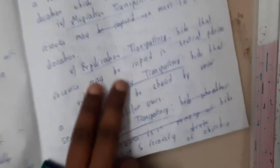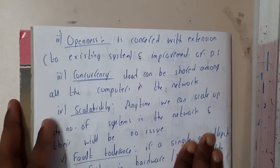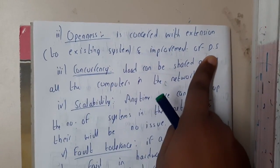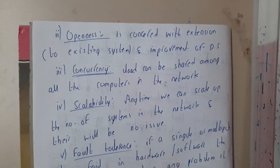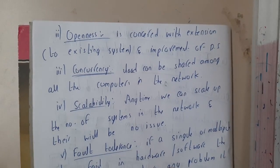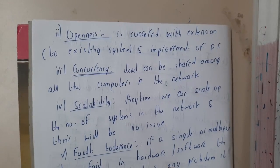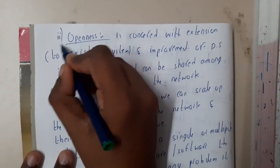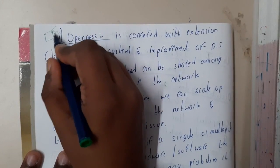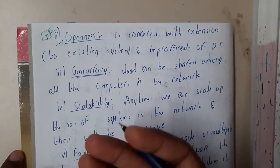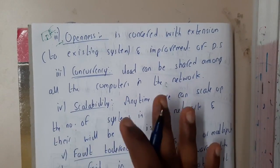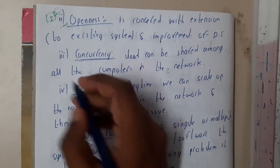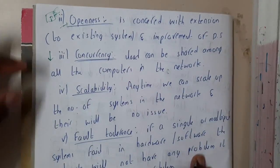The next characteristic is openness. Openness is concerned with extending or improving an existing distributed system. For example, if you are the owner of a server and you want to add more storage, increase the RAM, or change the processor, openness means you can upgrade or downgrade a single component while keeping the rest of the components the same — including reducing system capacity when needed.